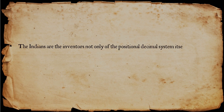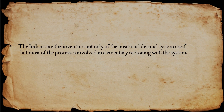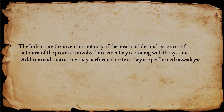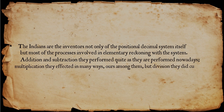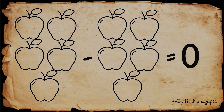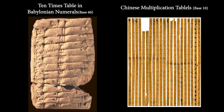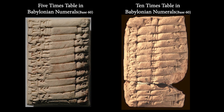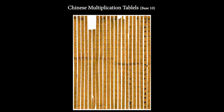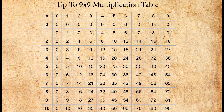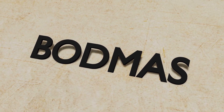A professor of mathematics at Princeton University stated: the Indians are the inventors not only of the positional decimal system itself, but of most of the processes involved in elementary reckoning with the system. Addition and subtraction they performed quite as we do nowadays; multiplication they effected in many ways. At that time, all calculation was done physically — adding 1 apple with 3 apples gives 4 apples, or subtracting 2 apples from 6 apples gives 4 apples. Subtracting 5 apples from 5 apples gives null or nothing, which was called 0. For multiplication, there were multiplication tables. The oldest known multiplication tables were based on base 60, used by Babylonians about 4000 years ago. The oldest known table using base 10 was a Chinese decimal multiplication table on bamboo strips. In modern times, you need only memorize the table up to 9 for multiplication, which is quite easy. Later, order of operations was introduced and we started calculating correctly.